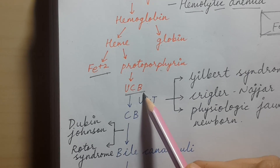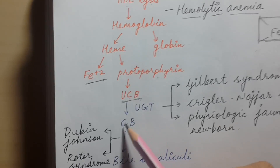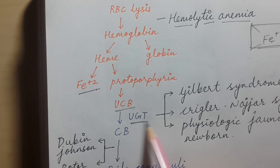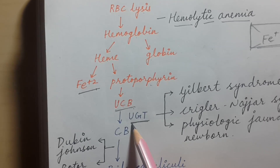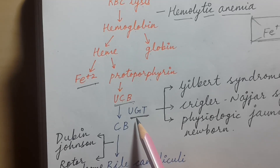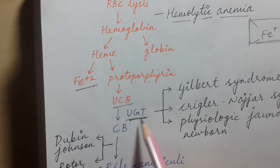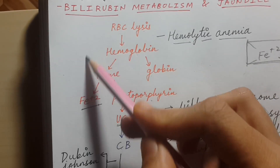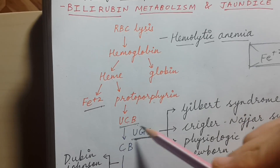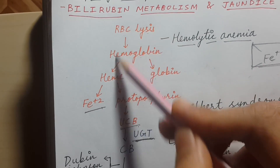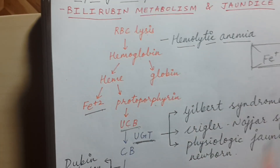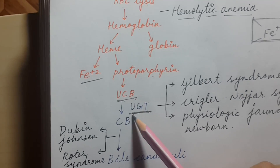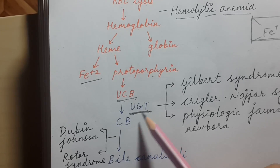From unconjugated bilirubin we get conjugated bilirubin through the help of the enzyme called uridine glucuronosyl transferase, or UGT. All the steps shown in orange occur in the blood, and the conjugation process occurs in the liver.